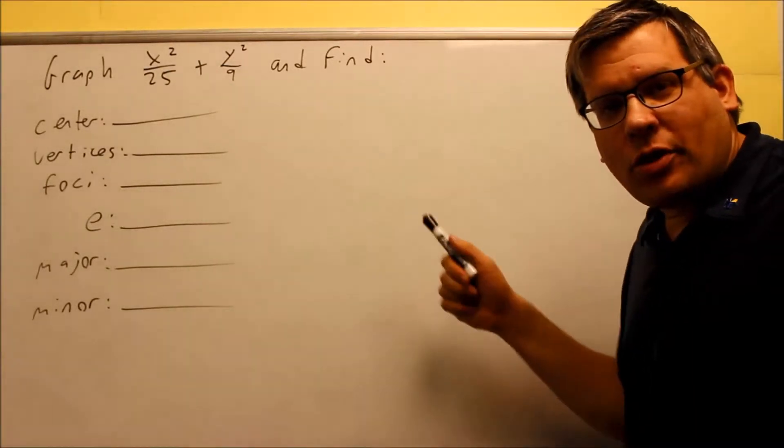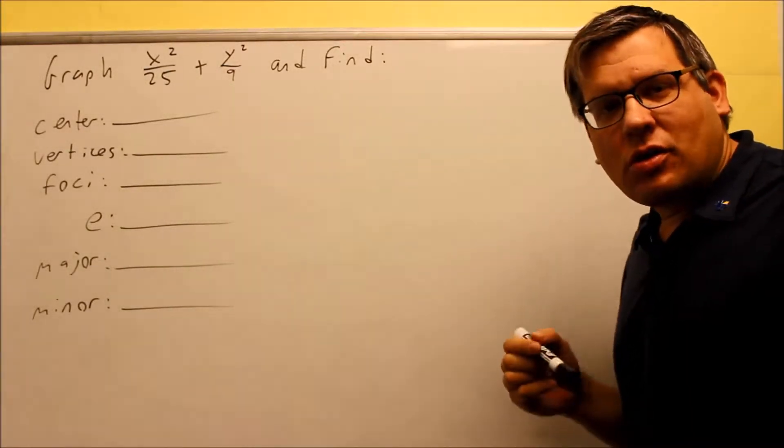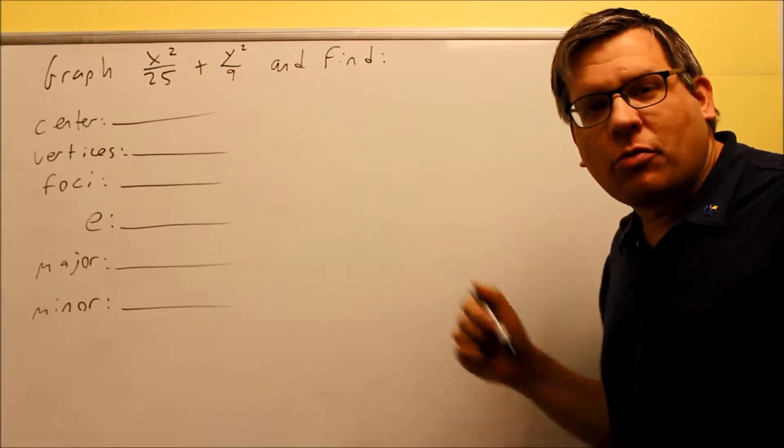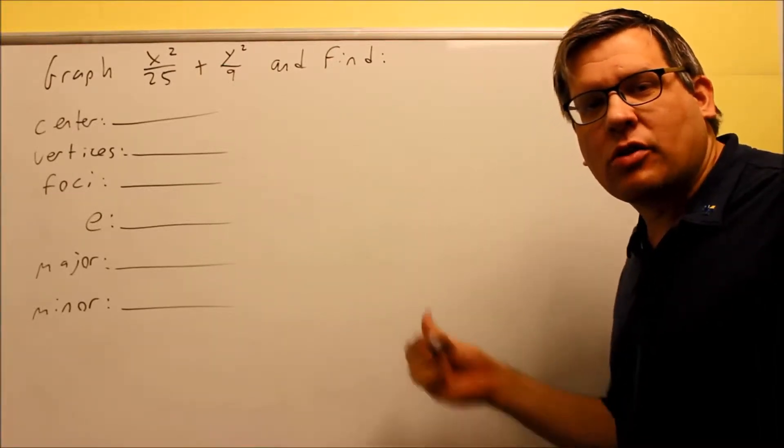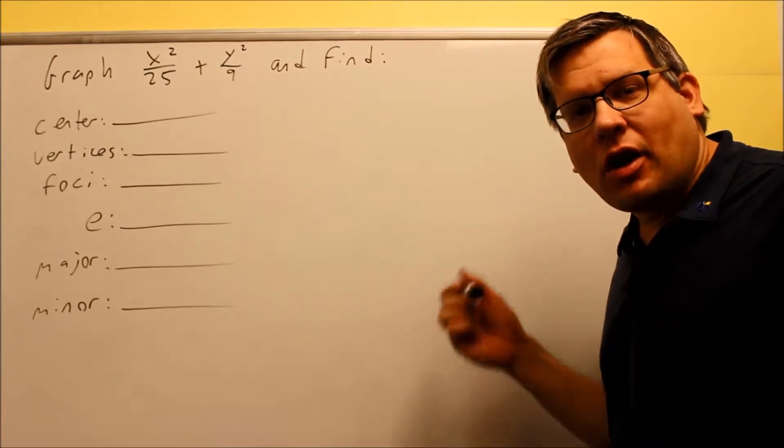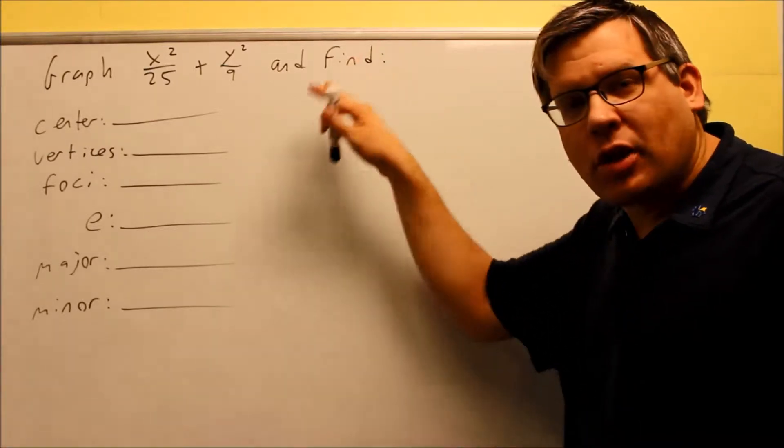Okay, in this section we're going to be graphing ellipses. Now in the notes, at the beginning, there's two different models for an ellipse opening up sideways and an ellipse opening up and down. There's some formulas that are given there for that one, and so we're going to be applying that here.